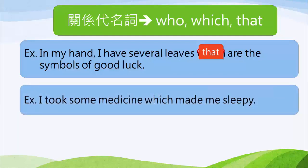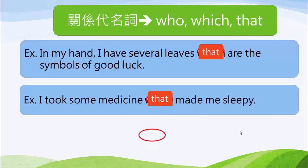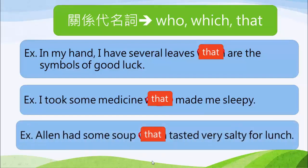第二句：I took some medicine which made me very sleepy. 先行詞是 some medicine（事物），所以關系代名詞用了 which。這一句當然也可以代換成 that：I took some medicine that made me very sleepy. 第三句：Alan had some soup which tasted very salty for lunch. Soup 是事物，所以當我們要用關系代名詞子句修飾 soup 的時候，選擇 which 或者是 that。